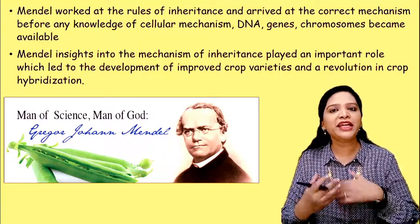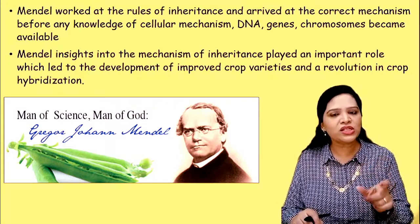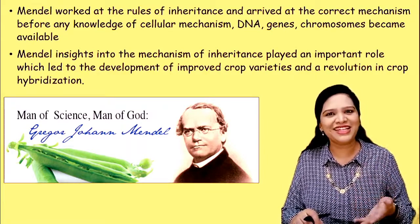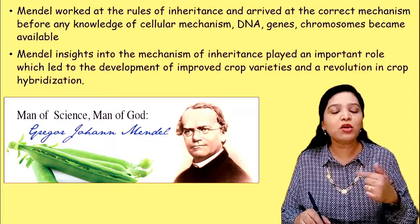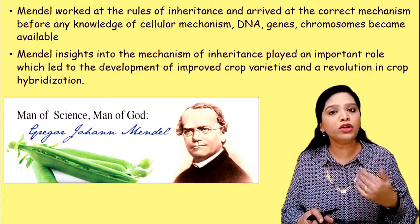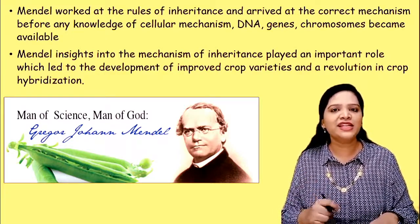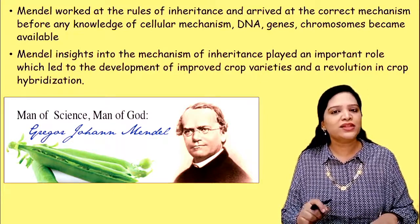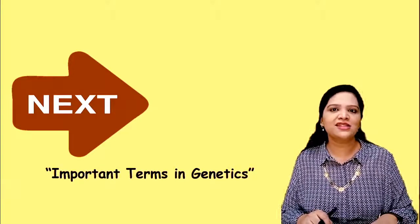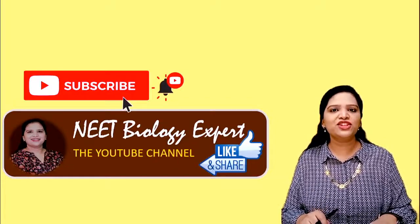From his experiments, Mendel proposed the laws of inheritance describing how characters are transmitted from parents to the next generation. The 'factors' he identified are what we now call genes, chromosomes, and DNA. Mendel's insights into the mechanism of inheritance enabled modern genetics, improved crop varieties, and crop hybridization. That's why Gregor Johan Mendel is called the father of genetics. Our next session will cover important terminology used in genetics. If you liked this lesson, please like, comment, share, and subscribe to our channel NEET Biology Expert. Thank you.